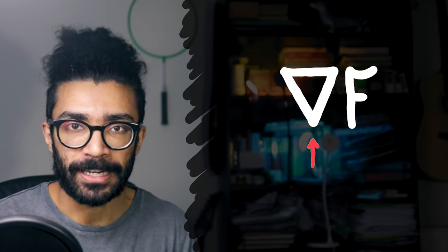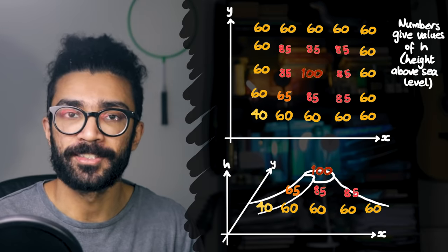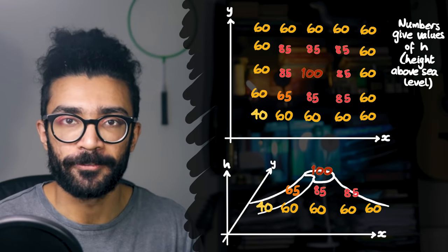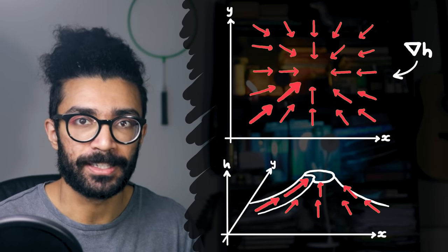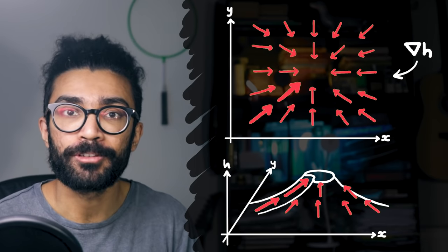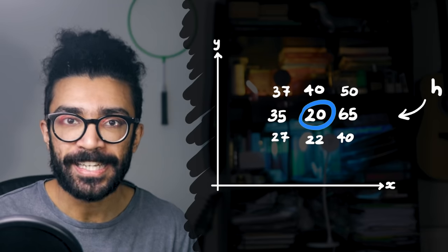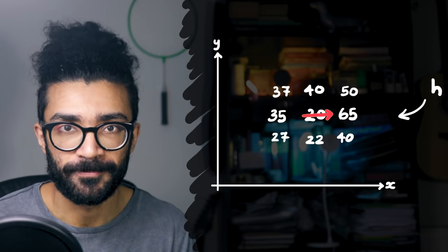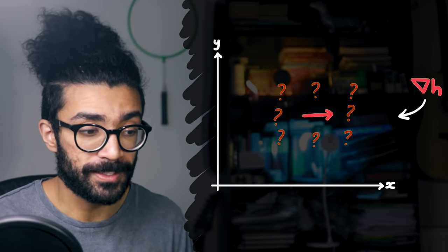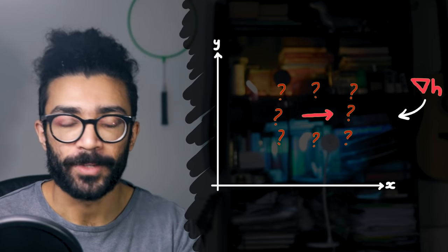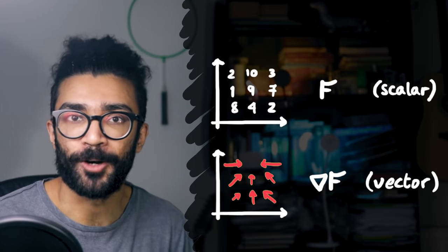The del operator can be used to find out how quickly our scalar field changes at every point — in other words, we can find the gradient of the scalar field. By applying the del operator to our scalar field H, we get the diagram showing the gradient of H. At each point, we see a vector that points in the direction that the scalar field increases most quickly. The size or magnitude of that vector represents exactly how much our scalar field is changing. So the crux of the matter is that applying our Nabla operator to a scalar field gives us a vector field that represents the rate and direction of fastest change of our original scalar field.